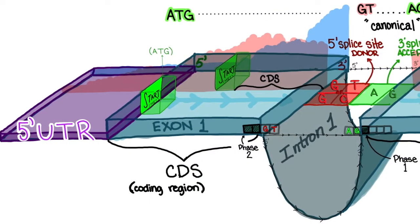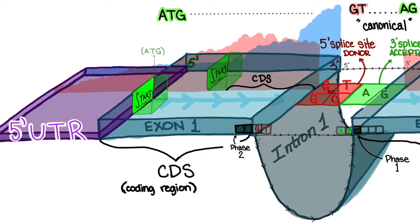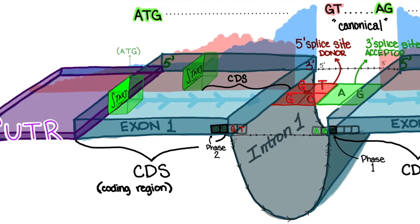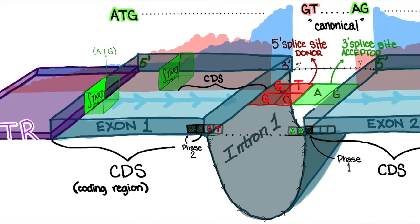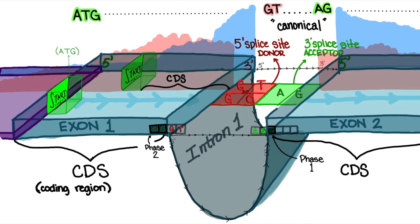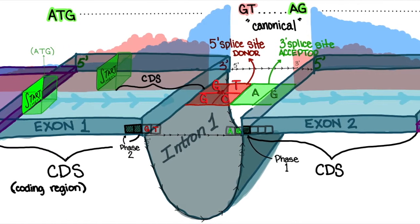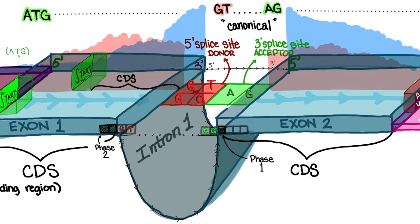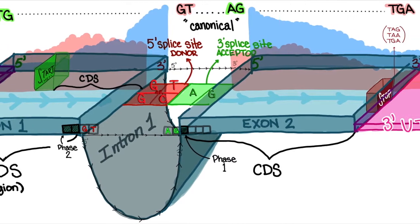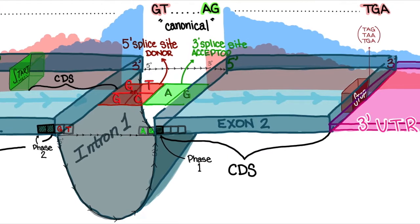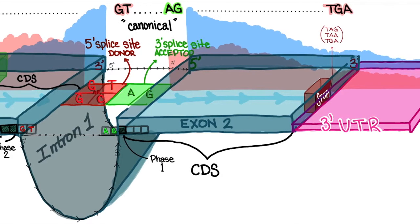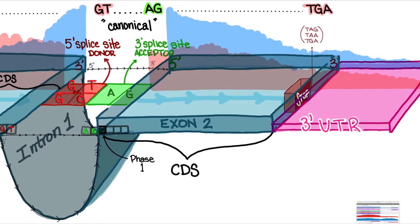Recall that the processed messenger RNA being aligned to the genomic DNA is only composed of the exons, which includes the untranslated regions, but not the introns — the sequences that get spliced out of the transcript. These sequences will not be present in the mRNA fragments when we align them to the genomic DNA, causing this characteristic sharp drop in data indicative of an exon-intron junction.